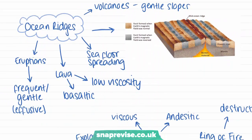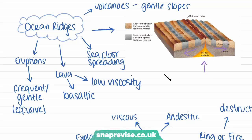At ocean ridges we get seafloor spreading, which we learned about in detail in the last video. This is where plumes of magma are coming up from the mantle and causing the crust to spread apart away from each other. This lava coming up from the crust — known as magma when it's in the crust and lava when it reaches land — is rising up and is able to form volcanoes.